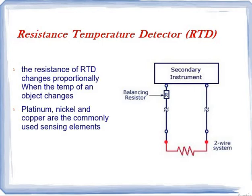Generally, whenever we give temperature to this object, the area is going to change. We are going to use metals over here — earlier we used metallic strips — and we are going to use materials like platinum, nickel, and copper as sensing elements. This type of instrument we are calling an RTD, a resistance temperature detector thermometer.